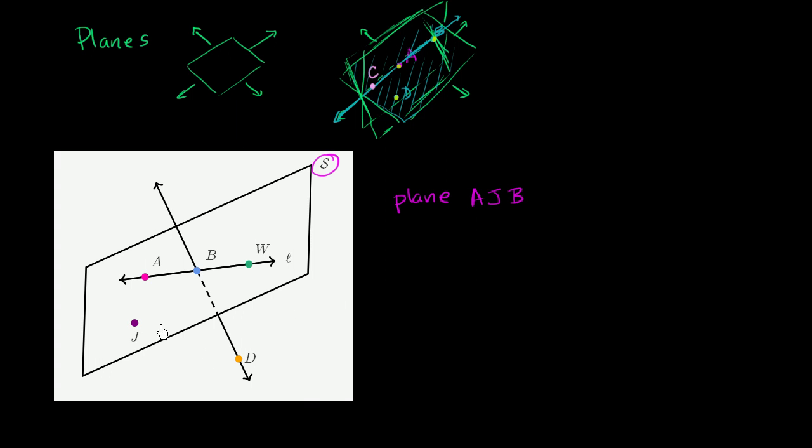We could call it plane J, B, W. Plane J, B, W. We could call it plane, and I could keep going. Plane W, J, A. W, J, A.